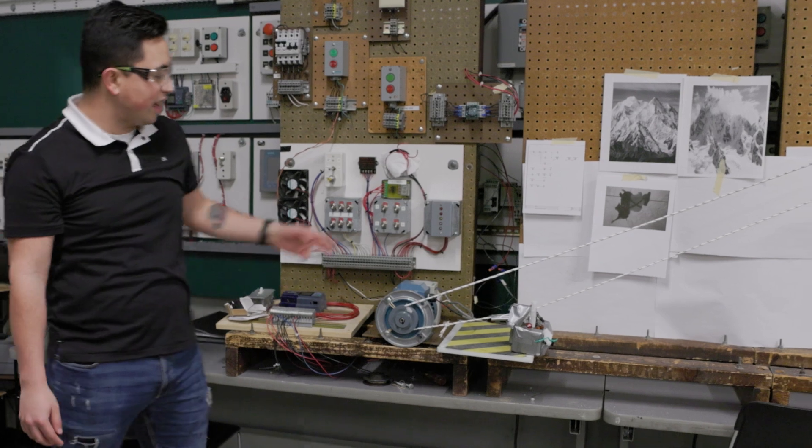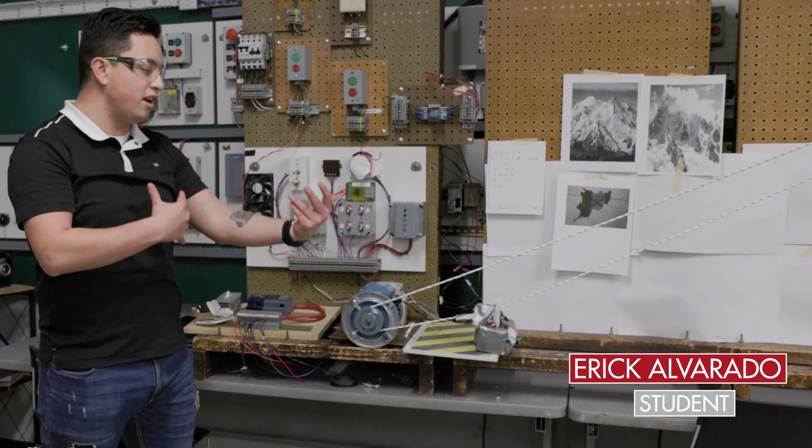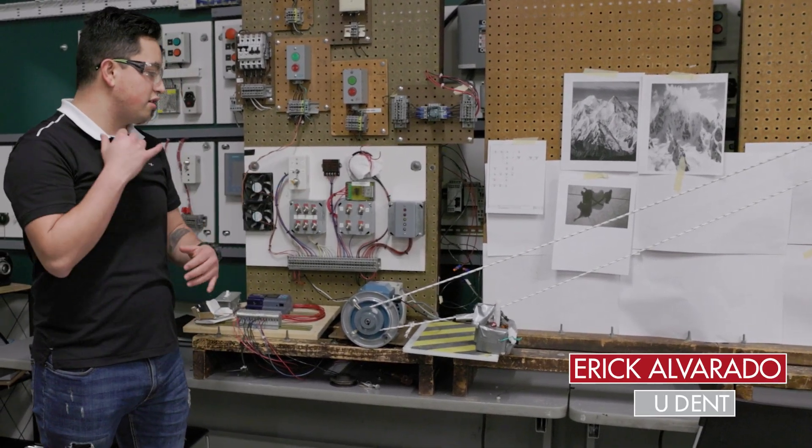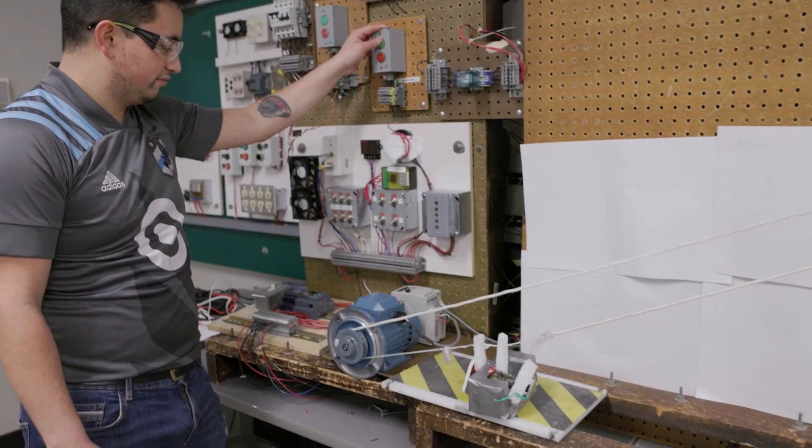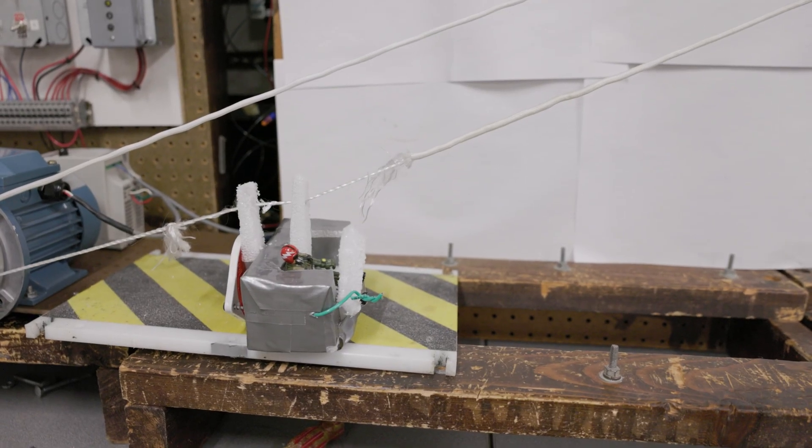Also the PLC is controlling the lights that we have. Red simulating you can get on into the ski lift, and then the other light simulating that it's time to get off. There's also a buzzer that will go off for five seconds.